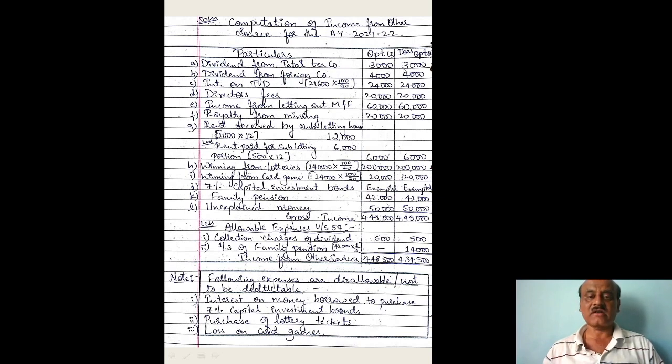Dividend from Tata Tea Company — taxable under the head 'Other Sources': Rs. 3,000. Next, dividend from foreign company: Rs. 4,000.